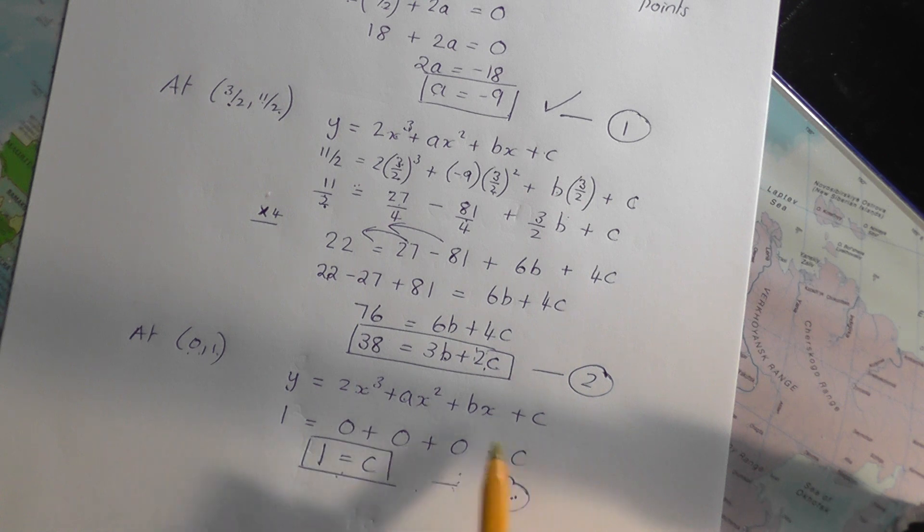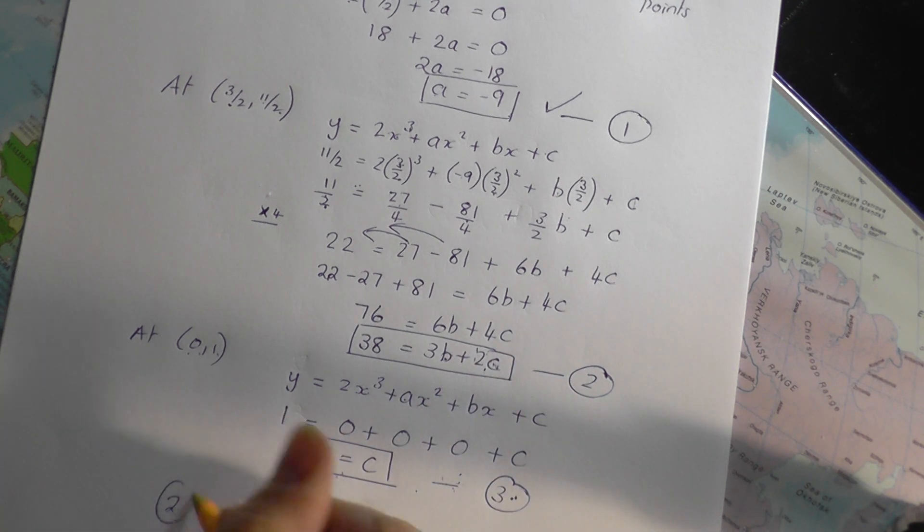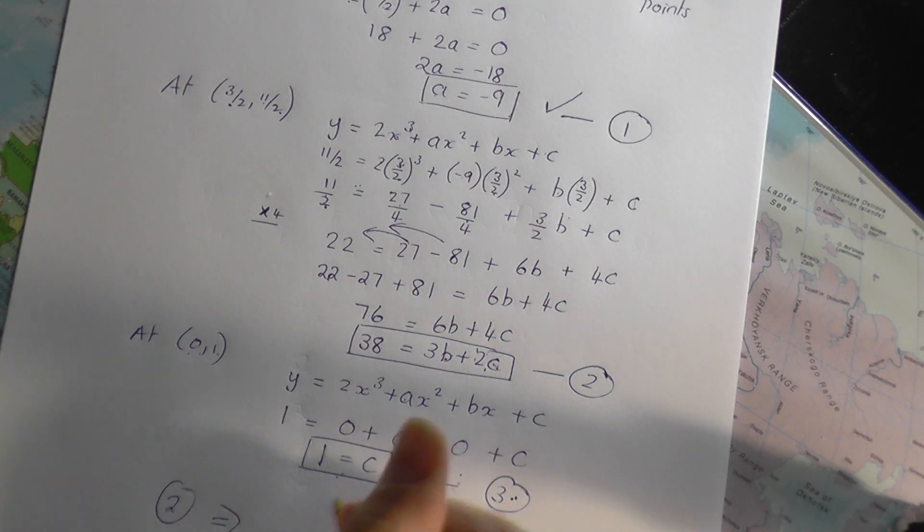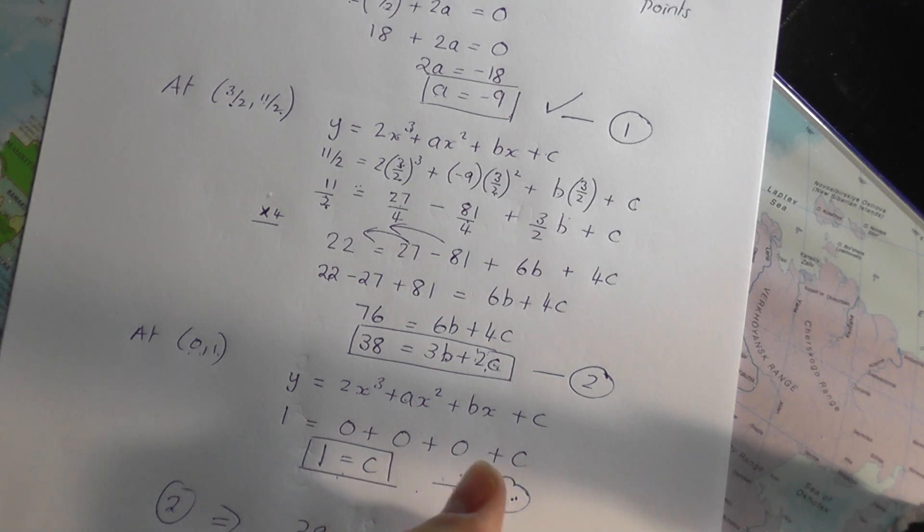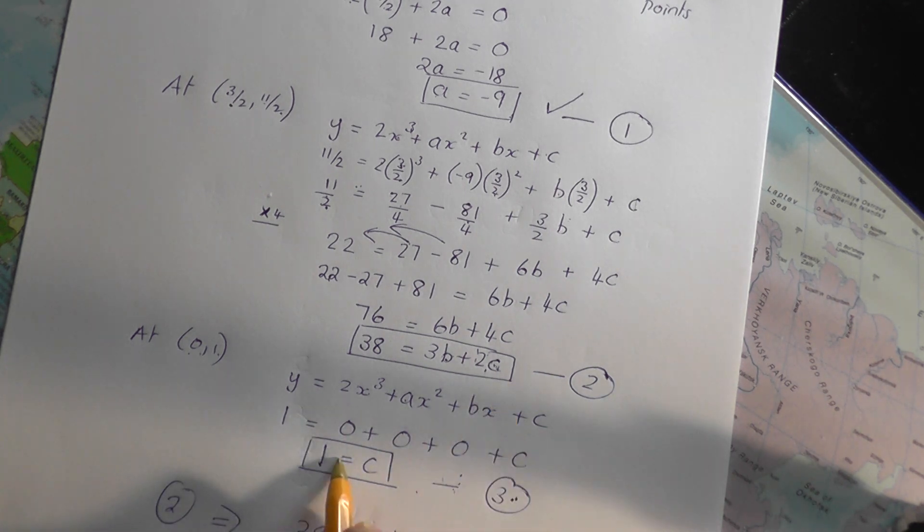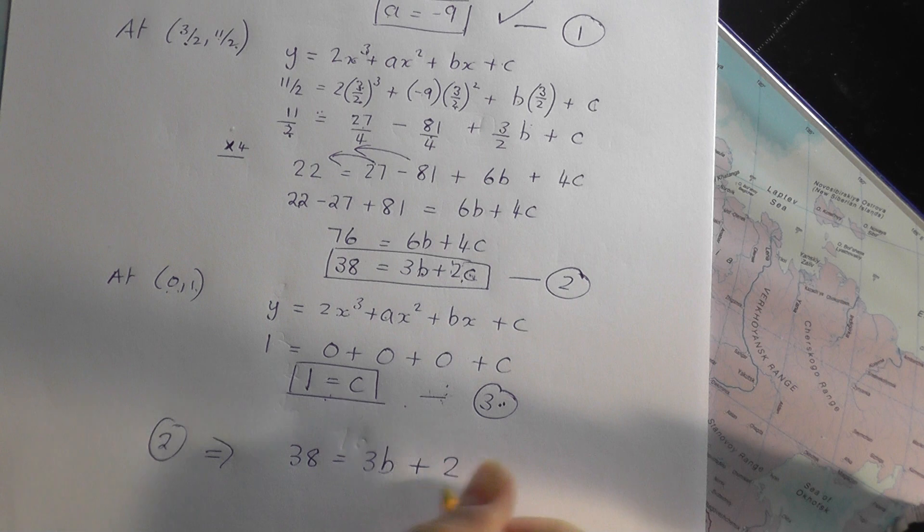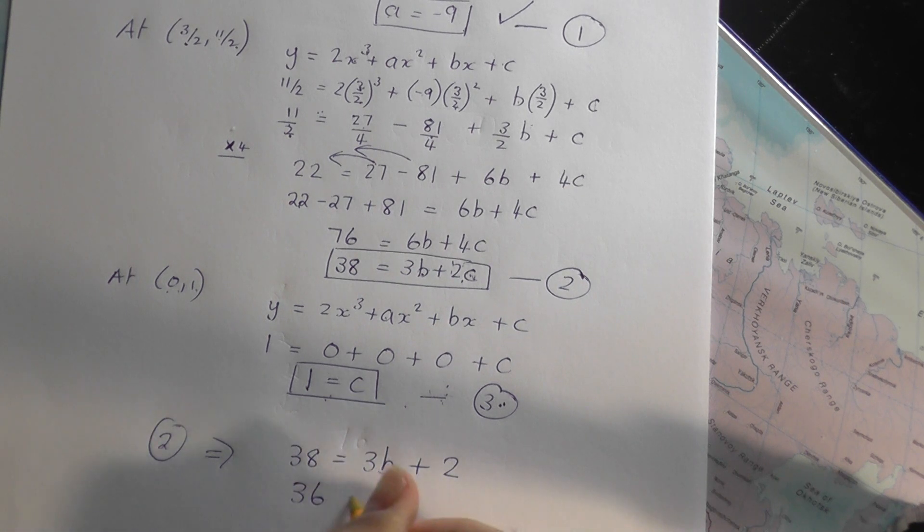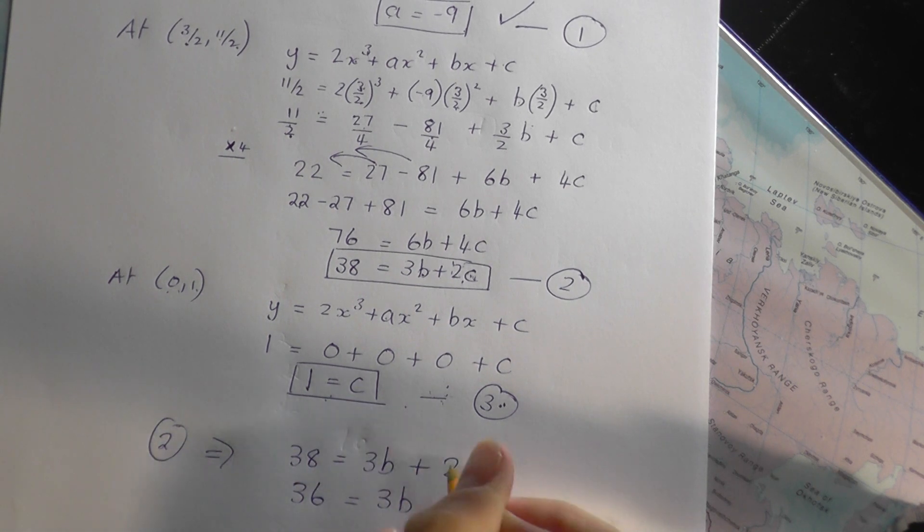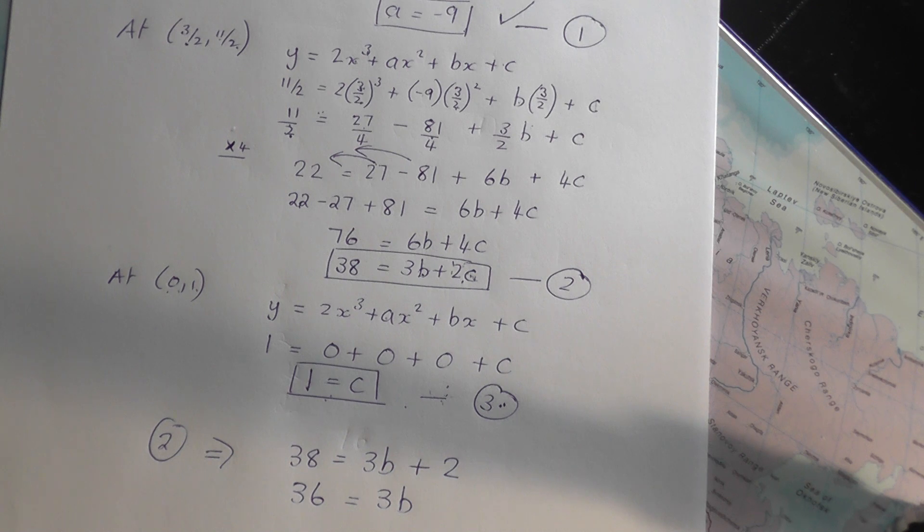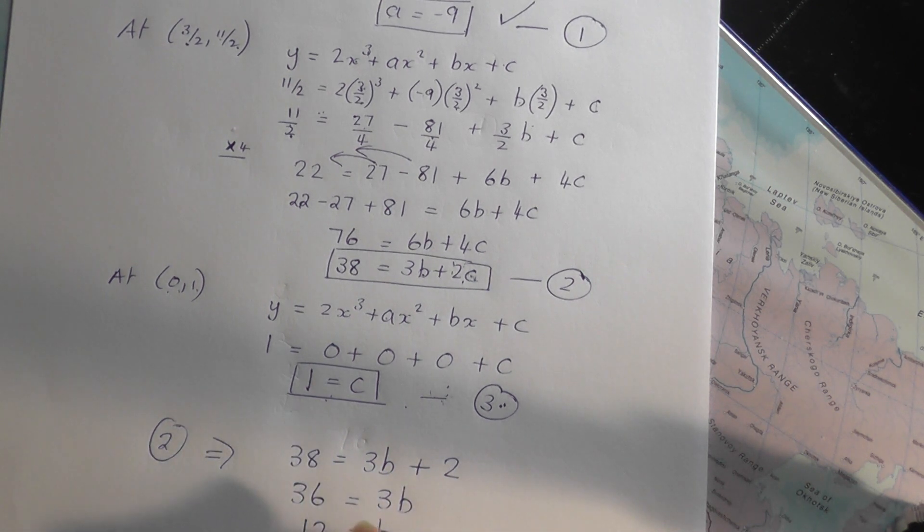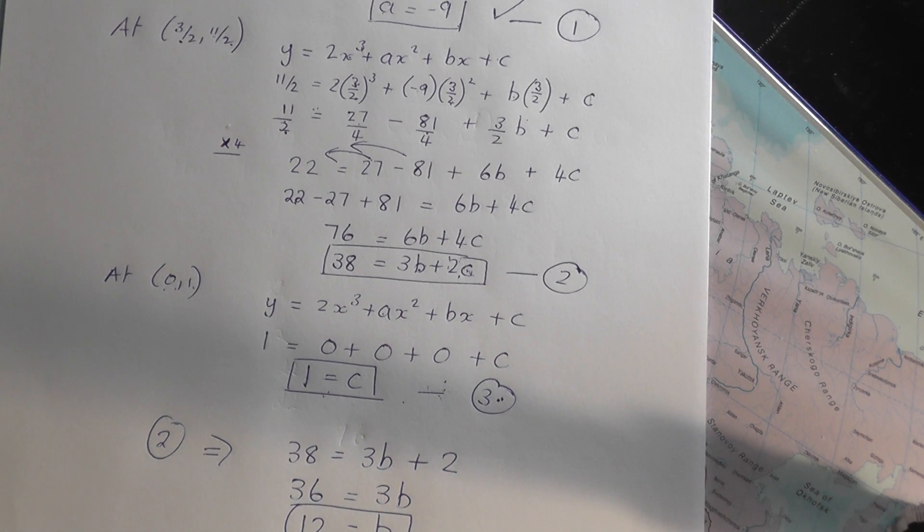So I can now work out what b is from this here. So equation 2 is going to give us that 38 equals 3b plus 2c. Well, c is 1. So 2 ones are 2. So take the 2 over. 36 equals 3b. When you take the plus 2 to become minus, divide by 3 and you get b is equal to 12. And there is the final answer.